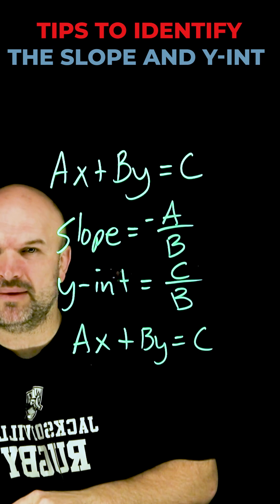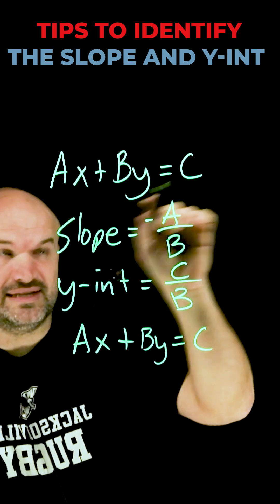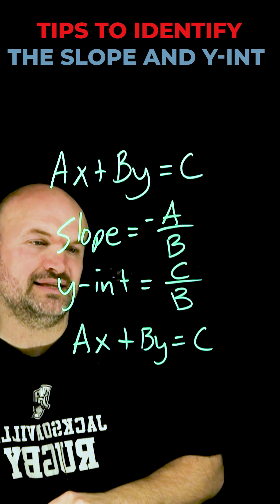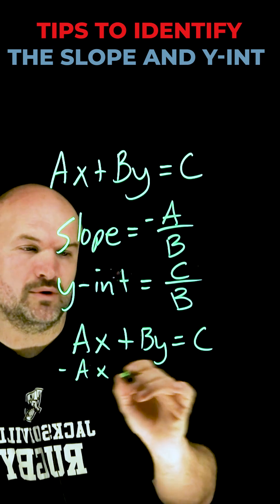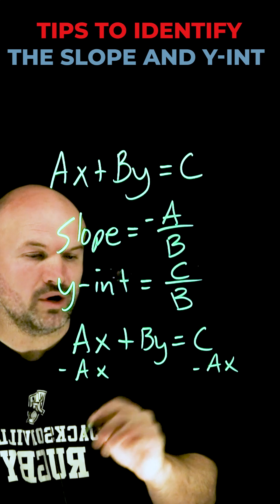We can just remember exactly where they come from. This is in standard form. We can identify the y-intercept and the slope if our equation is in slope-intercept form. To do that, we're going to solve for y.